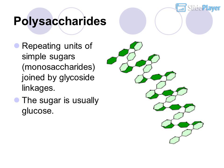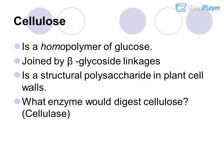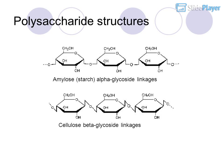Polysaccharides are repeating units of simple sugars (monosaccharides) joined by glycoside linkages. The sugar is usually glucose. Cellulose is a homopolymer of glucose joined by beta glycoside linkages and is a structural polysaccharide in plant cell walls. The enzyme that digests cellulose is cellulase. Amylose and starch are joined by alpha glycoside linkages.